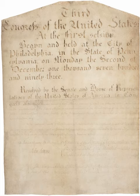The Eleventh Amendment was the first constitutional amendment adopted after the Bill of Rights. The amendment was adopted following the Supreme Court's ruling in Chisholm v. Georgia, 2 U.S. 419. In Chisholm, the court ruled that federal courts had the authority to hear cases in law and equity brought by private citizens against states, and that states did not enjoy sovereign immunity from suits made by citizens of other states in federal court.